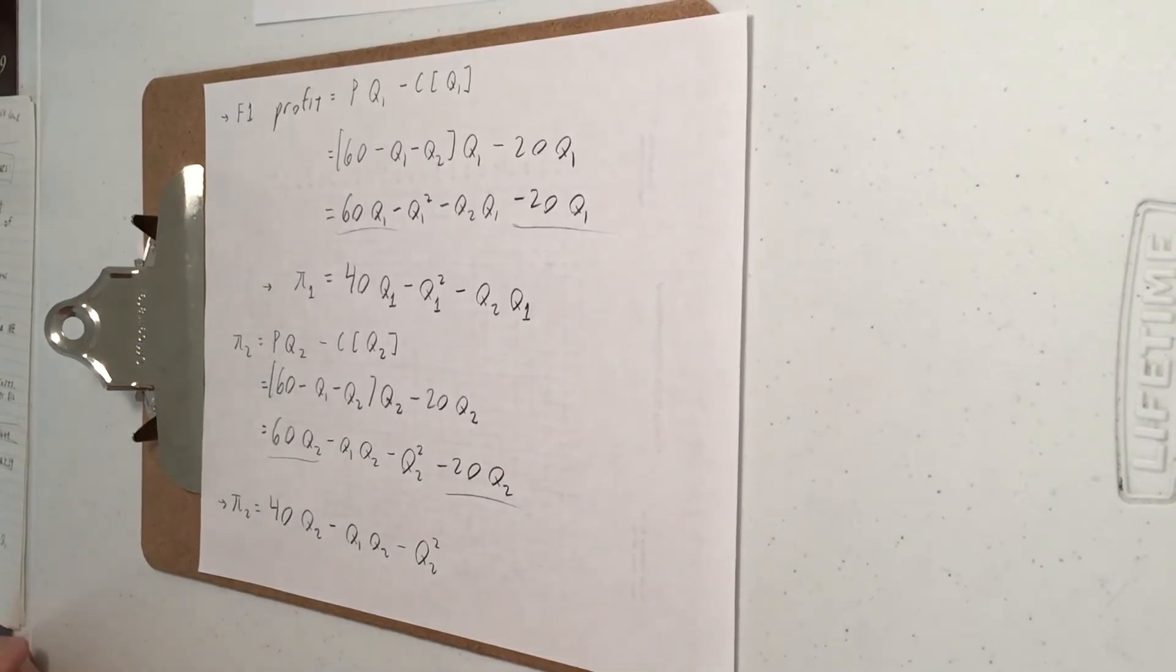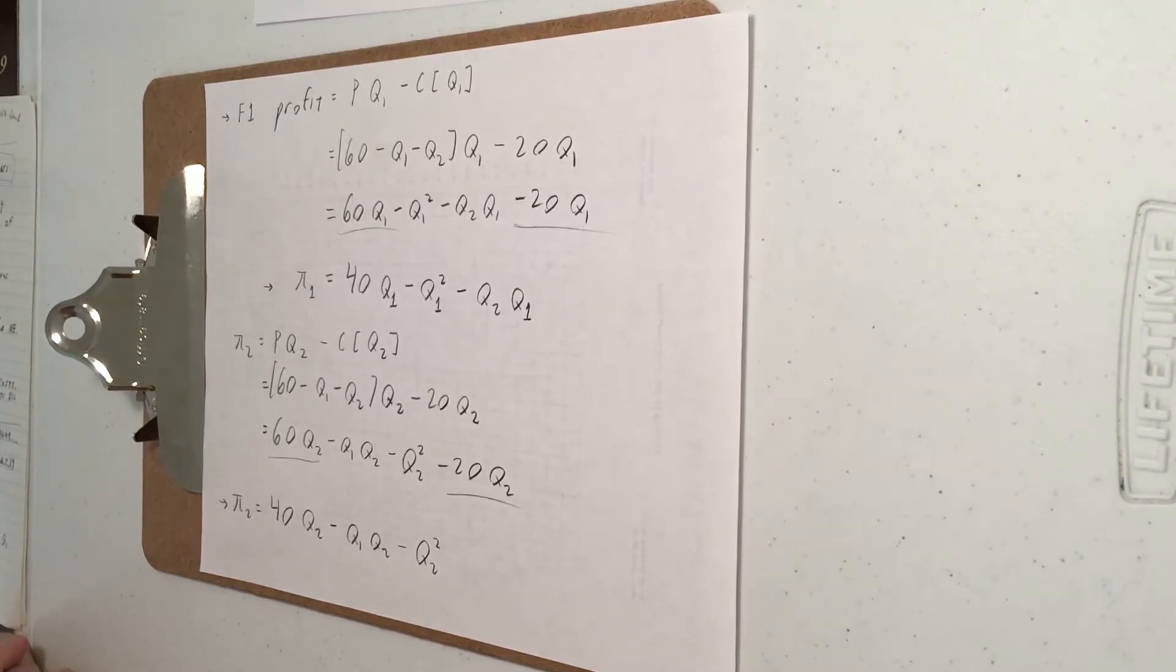All right. So I've written down the payoff functions. So to get some practice, go ahead and try to work out what is Q1 and Q2 in the Nash equilibrium. Follow that same procedure we had in the previous video. So pause here, solve that problem. And when you're ready, press play and you'll see if you're right.